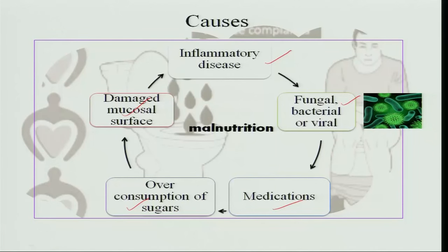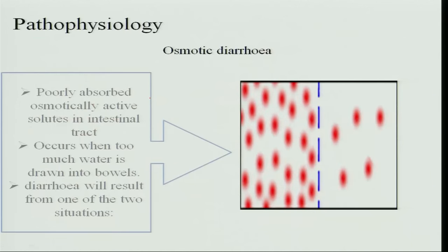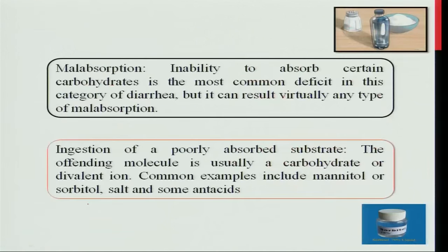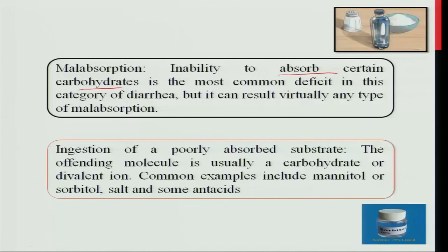Whenever there is a damaged mucosal surface in the intestine, this also causes diarrhea. Osmotic diarrhea involves poorly absorbed, osmotically active solutions in the intestinal tract. This occurs when too much water is drawn into the intestinal lumen, resulting from malabsorption — especially malabsorption of carbohydrates, which is the most common deficit in this category. Ingestion of poorly absorbed substrates such as mannitol, sorbitol, salt, and some mannetic acids also attracts more water into the lumen and causes diarrhea.